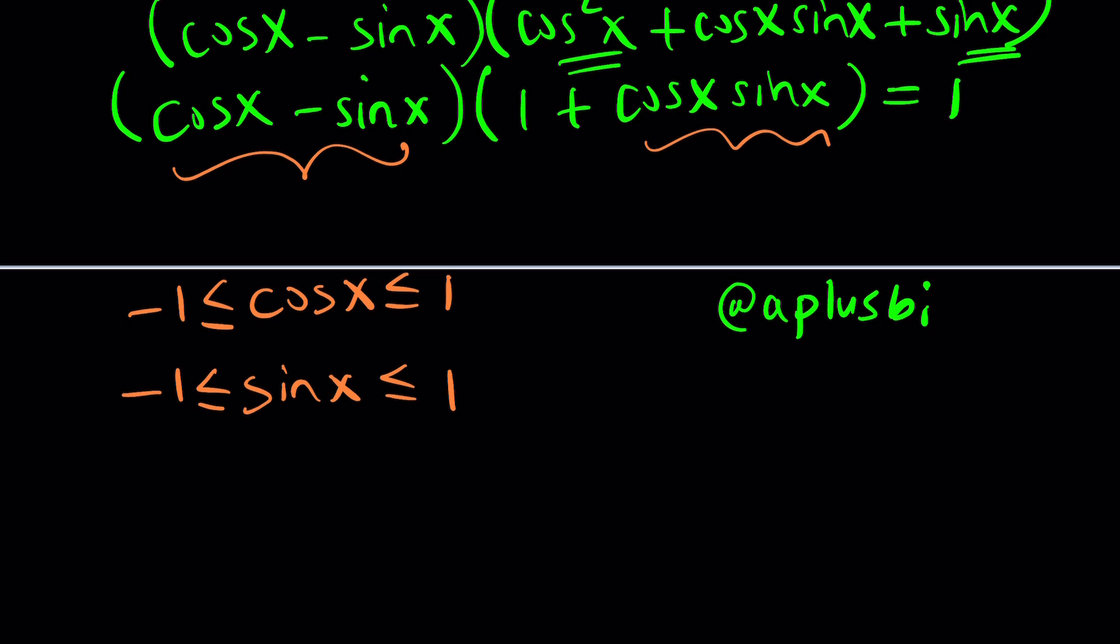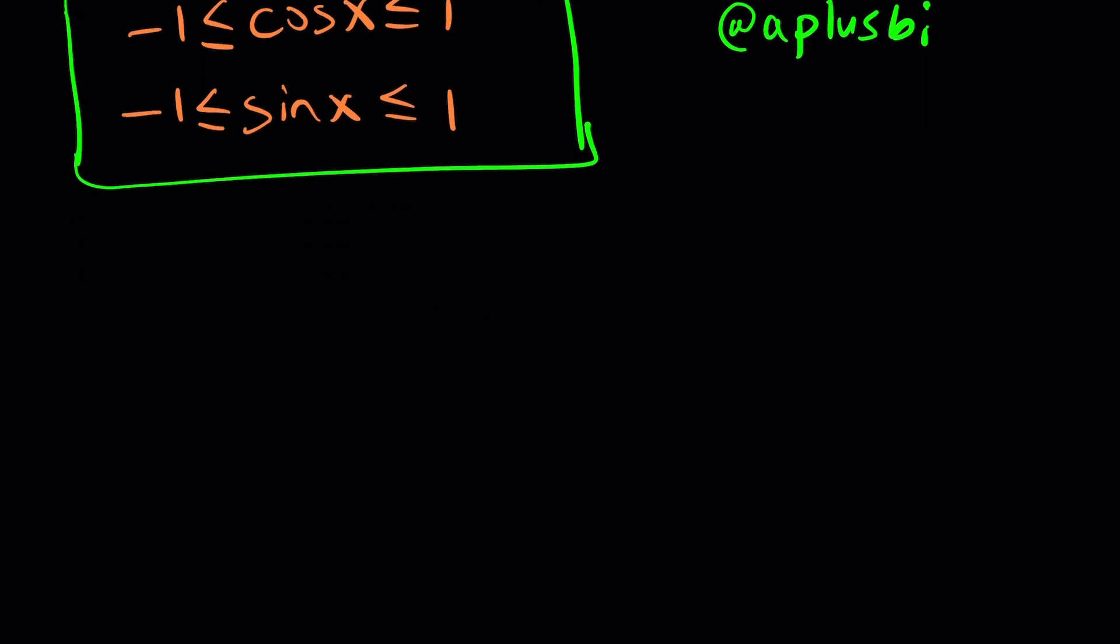Now, once we establish this, how is this going to help us? I mean, you can go ahead and try to raise both sides to the 10th power. But you don't really need to do that because think about it. If cosine is going to change between negative 1 and 1, obviously there's a symmetry. If you split into two halves at 0, then they're going to be symmetrical.